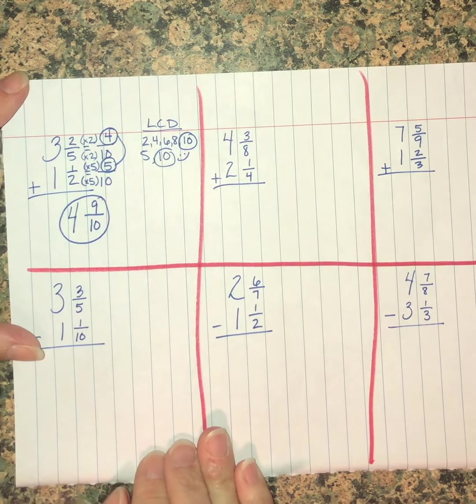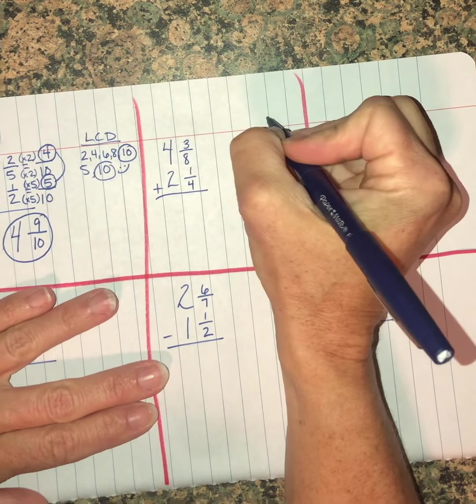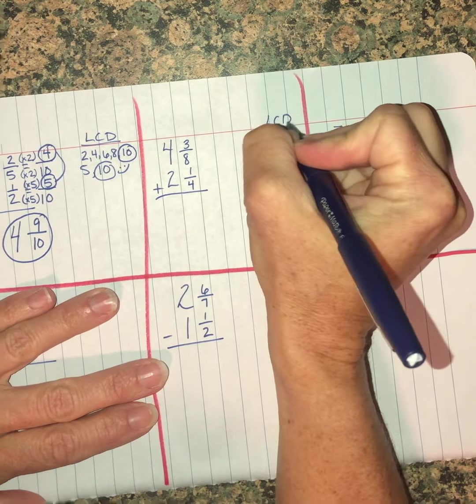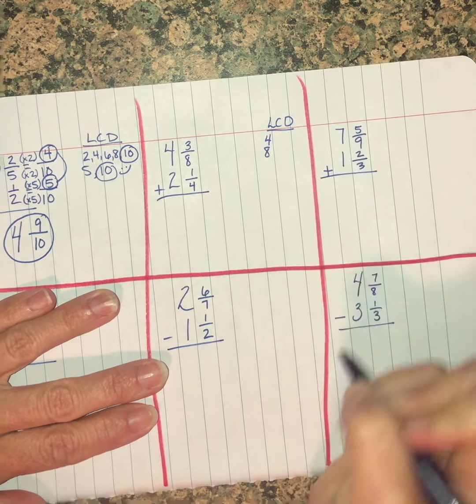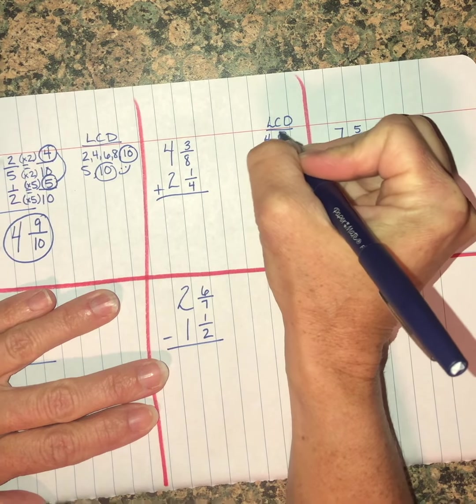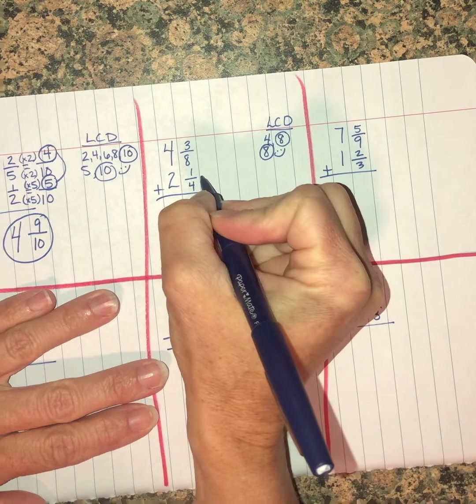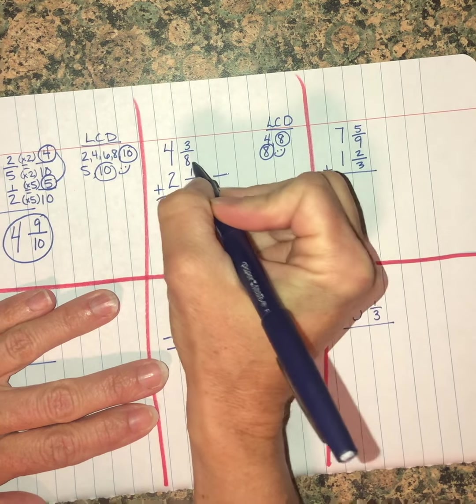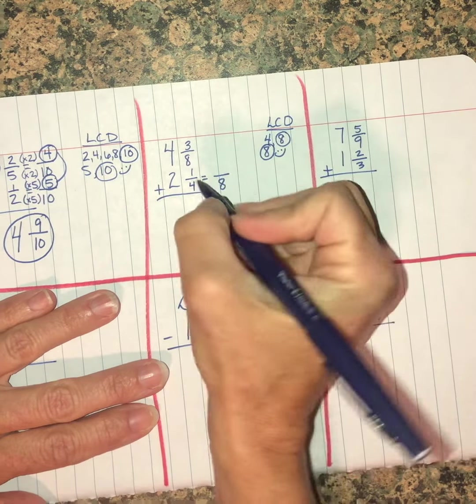Moving on to the next one, looking for my LCD of four and eight. Multiples of four: four, eight. Ding ding ding, this is my winner. So I'm going to change only this bottom fraction because I already have an eight there.